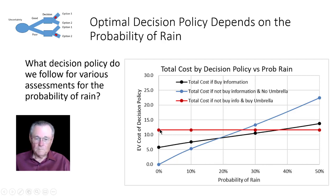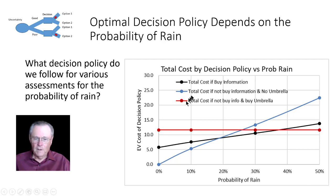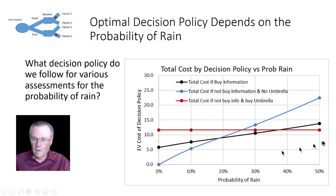Let's look at the red line — total cost if we do not buy the information but do buy the umbrella. That's just the cost of the umbrella; it doesn't matter what the probability of rain is. On the blue line, total cost if we don't get the information and no umbrella — it's zero cost because we didn't incur any costs at all. In the middle there are different decision policies, but we're trying to minimize our cost. Our efficient frontier comes down through here, and through around 18%, we would not buy information and not take our umbrella.